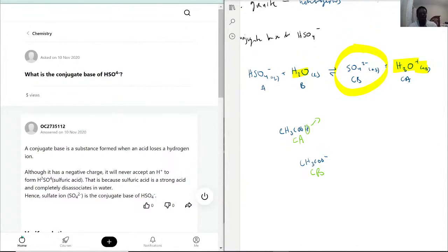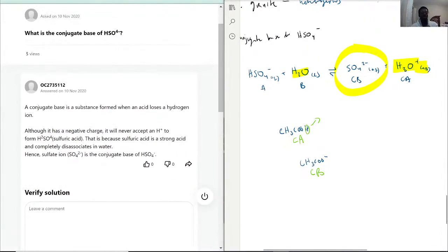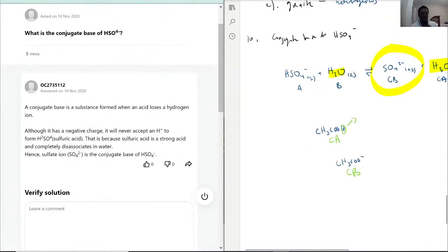And that's really what this question has done. So when we look at this answer, we have conjugate base as a substance forming an acid to lose the hydrogen, and although it has a negative charge, it will never accept hydrogen to form H2SO4, which is not necessarily correct. So there's ways to have two Hs in an SO4 in a liquid, because it's fully dissociates. But you can still have H and SO4 there.